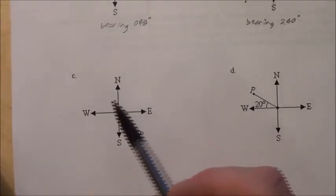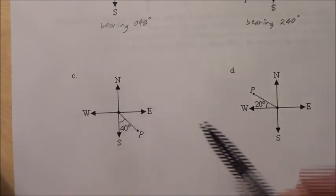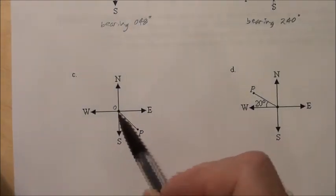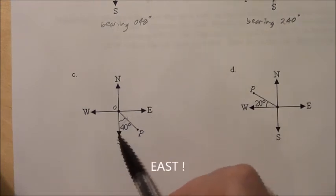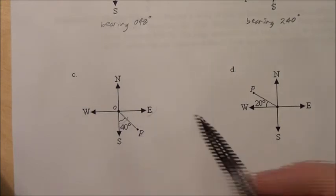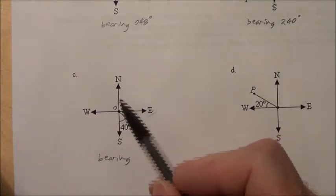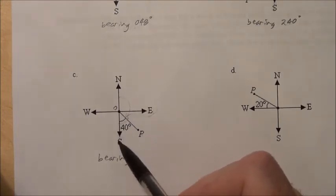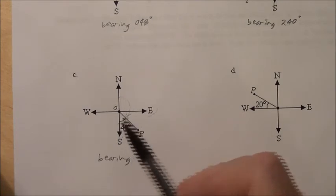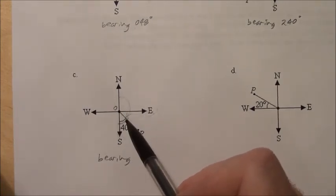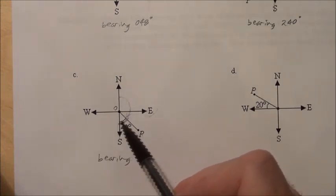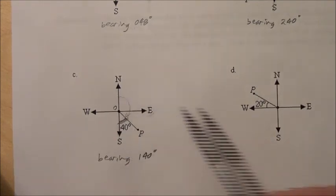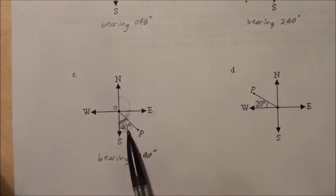In Part C, point P is on the southern side. In cardinal directions it is south 40 degrees east. For the bearing, we start at north, rotate clockwise, pass 90, but don't reach 180 — we're actually 40 degrees short of 180. So we take 180 minus 40 to get a bearing of 140 degrees.